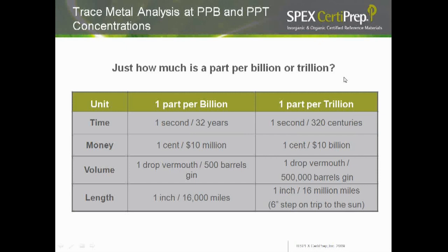In terms of volume: one drop of vermouth in 500 barrels of gin is one part per billion; one drop of vermouth in 500,000 barrels of gin is one part per trillion. In terms of the unit of length — the inch: one inch in 16,000 miles is one part per billion; one inch in 16 million miles is one part per trillion.